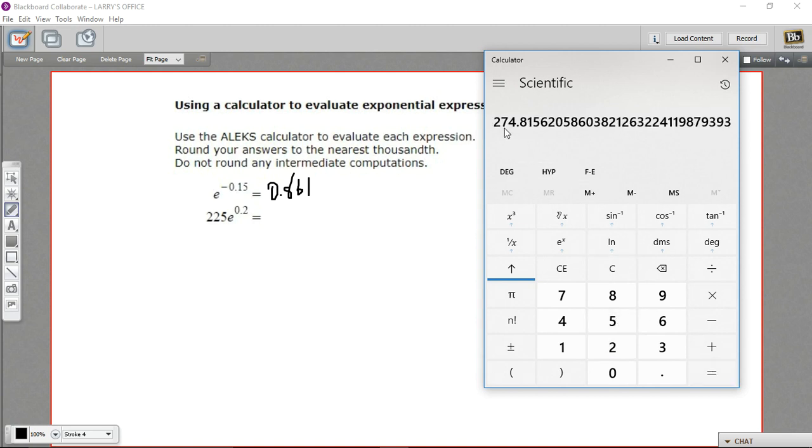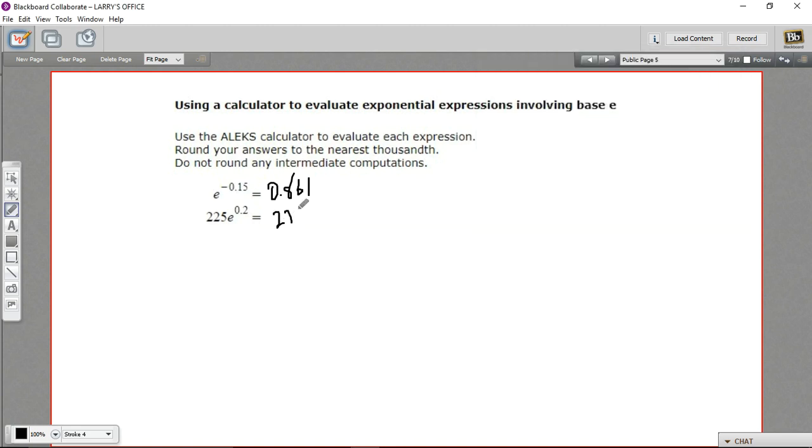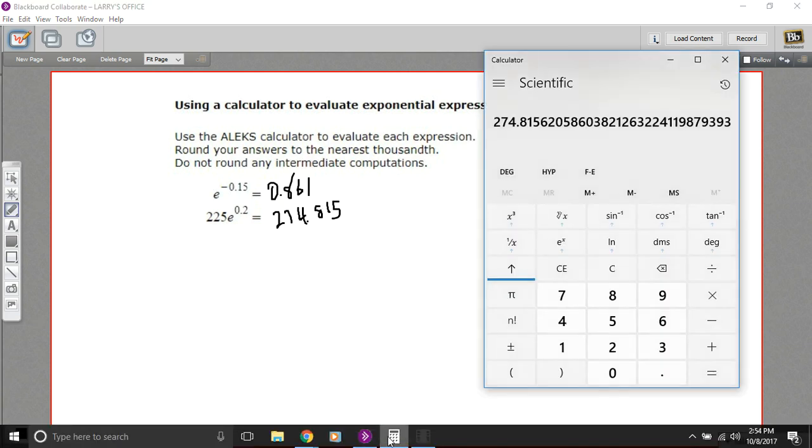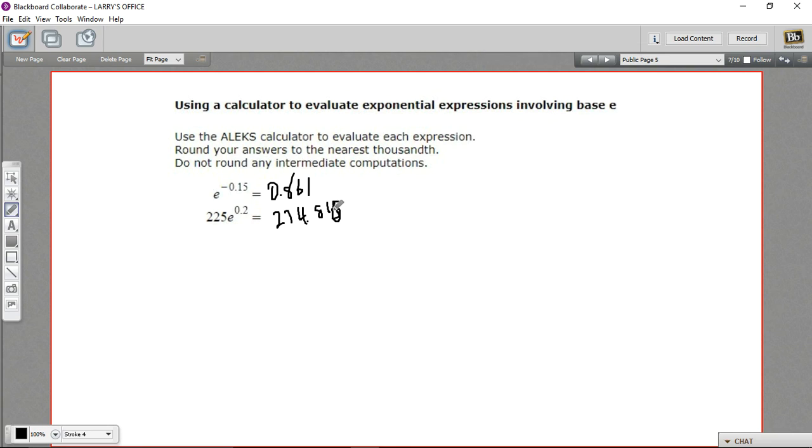And what we get is 274.815. And let's see, did I round that correctly? 8156. So 816, aha, to the nearest thousandth. So that is how to evaluate exponential expressions that have the number e in them.